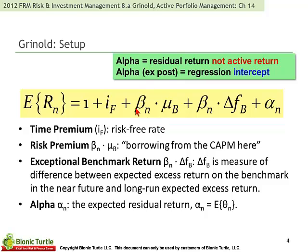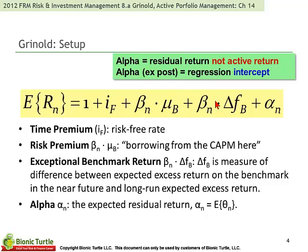What Grinold is doing is basically extending the CAPM into a multi-factor CAPM and APT model as the basis for attributing returns. Here we've got the risk-premium exposure to a factor, and then it's broken out with an additional term they call the exceptional benchmark return — the difference between the expected excess return on the benchmark in the near future and the long-run expected excess return. We can think of this as a timing factor. Without it, we might have a long-run CAPM, but in the near term there may be something abnormal or excess that we capture in its own factor.